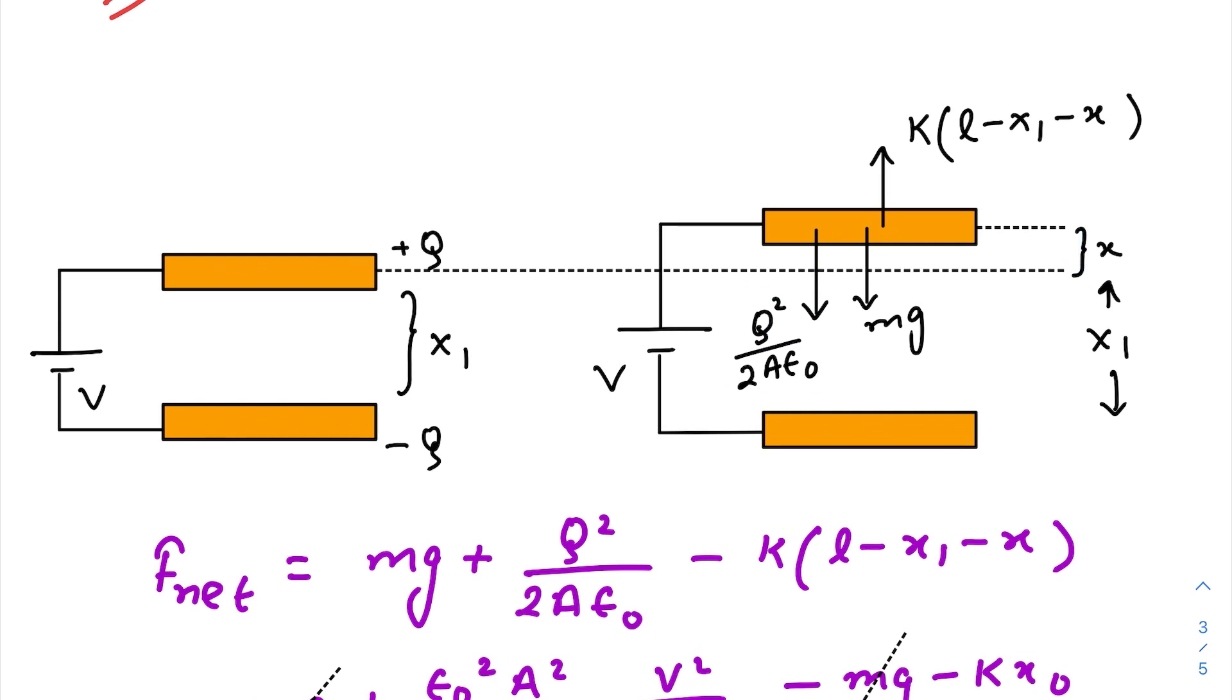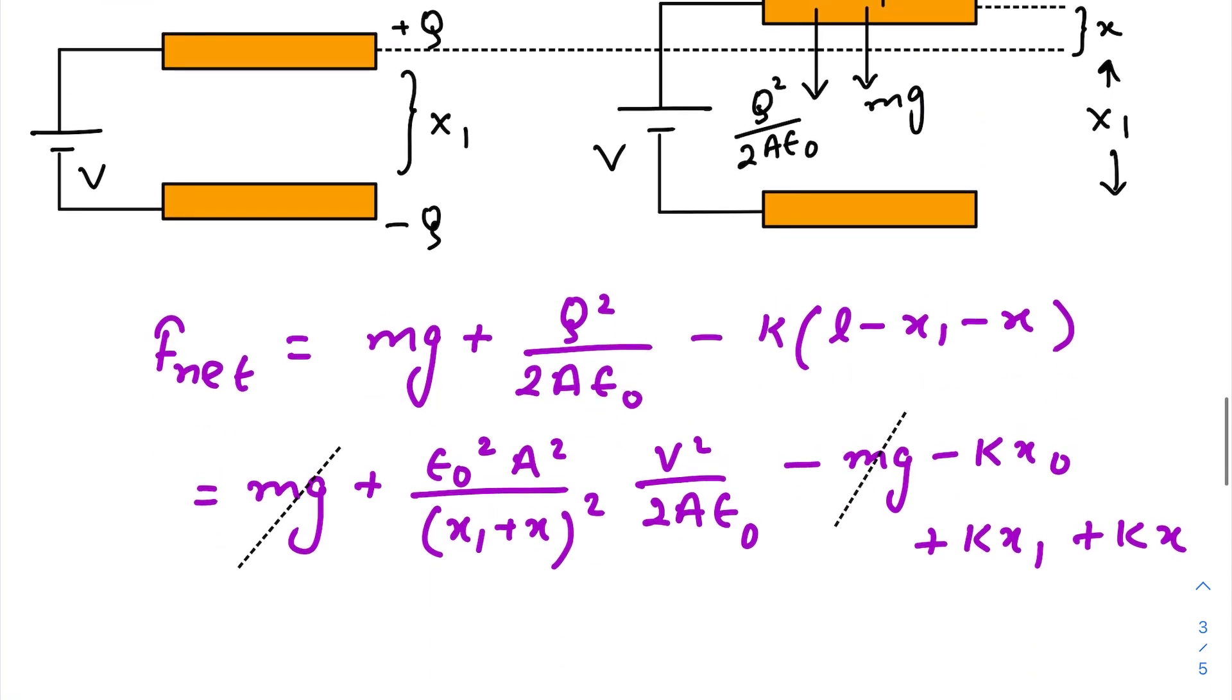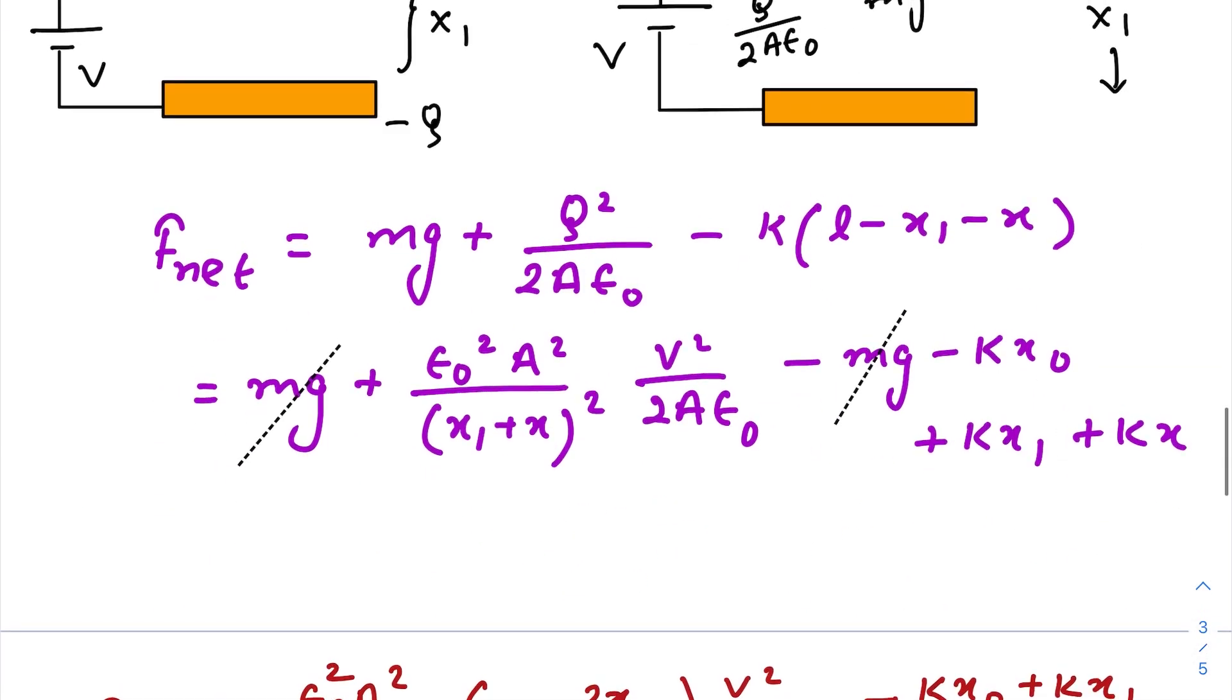And the new compression of the spring, initially it was l minus x1. Now due to the rise of this plate by an amount x, the compression decreases by a value x. So new compression is this one. So the upward force changes by this. So the F net is mg plus this one, the downward force, minus the upward force. Again you will use the value of k l that we have already got in our previous question.